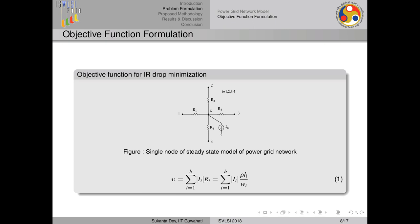The objective function is straightforward. For a metal line carrying current I and having resistance R, the IR drop will be I × R. For the whole power grid network, summing all individual IR drops gives the total IR drop of the chip. In the paper, we proved that if we minimize the total IR drop of the chip, the worst-case IR drop — our main concern — will also reduce.